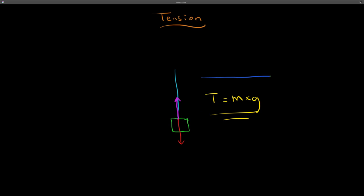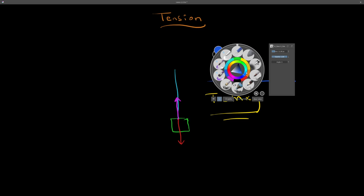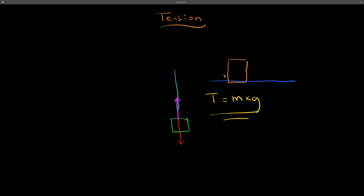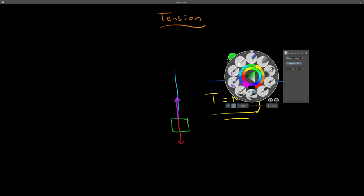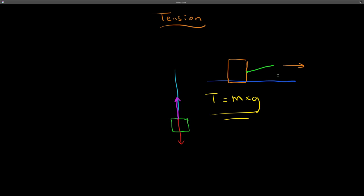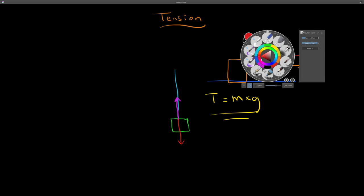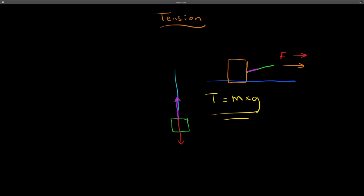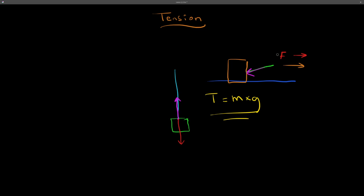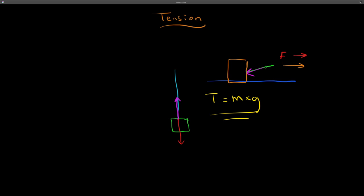There is also tension force on horizontal planes — it doesn't have to be hanging. For example, when you pull a block attached to a rope, there's the force you apply and the tension force in the rope. The tension force is equal to the force that you exert — if you exert 300 Newtons, the tension force will also be 300 Newtons, similar to Newton's Third Law.